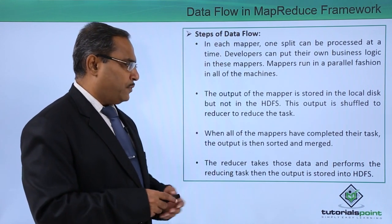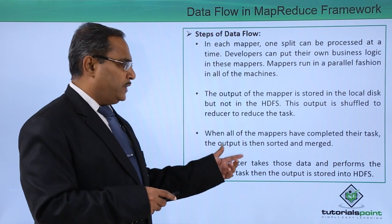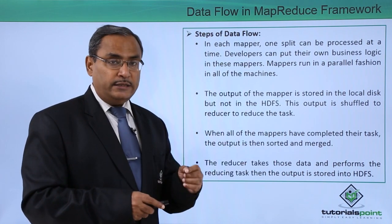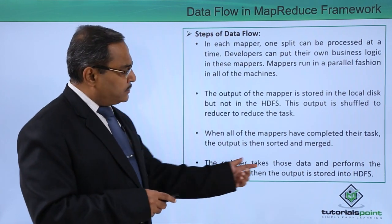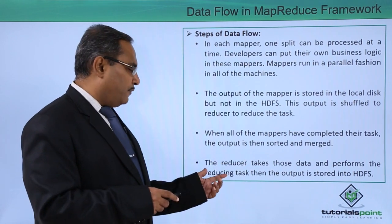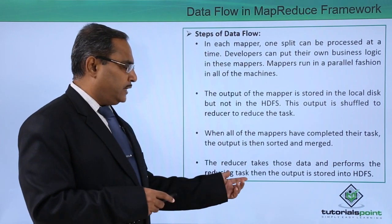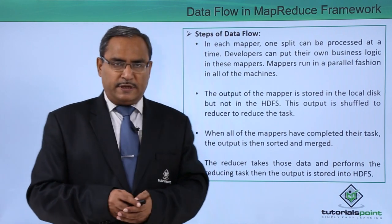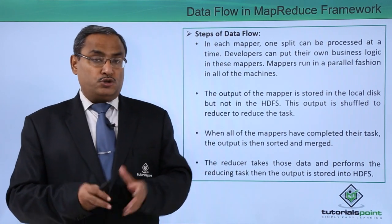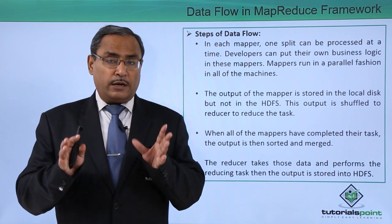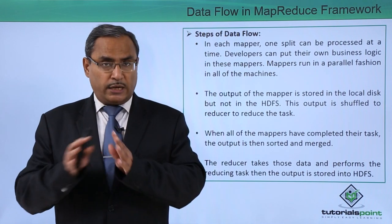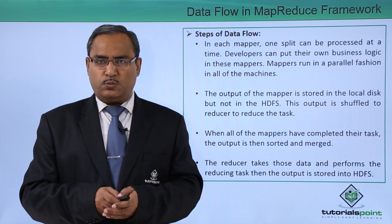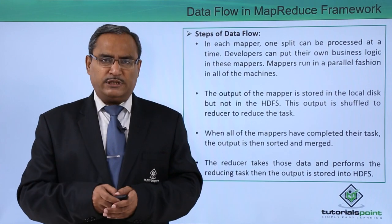When all of the mappers have completed their task, the output is sorted and then merged. The reducer takes that data, performs the reducing task, and the final output is stored onto HDFS in the form of part-0. That is our mapper and reducer and how the data flow takes place. Thanks for watching this video.